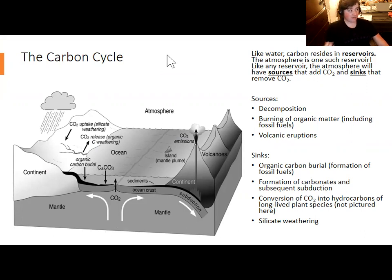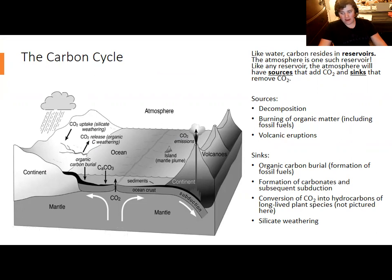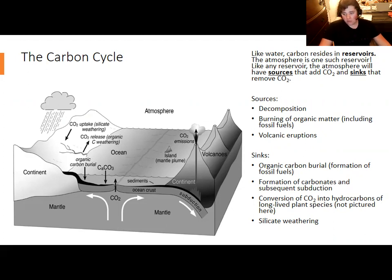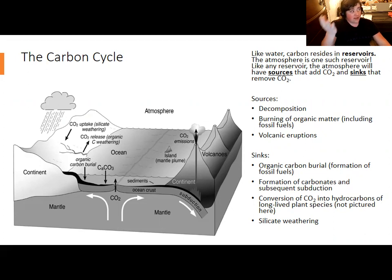When I talked about glaciers before, I briefly introduced the water cycle to put glaciers in context. The water cycle outlines all of the reservoirs — places where water remains for any period of time — as well as the paths connecting them, like evaporation connecting water in the ocean and water in the atmosphere. You can create similar diagrams for other substances that cycle between different forms, and this can indeed be done for carbon.